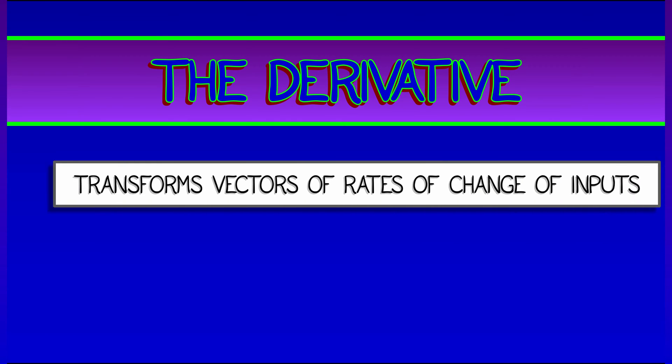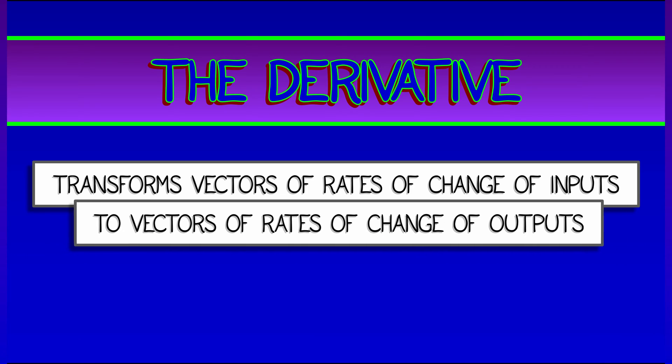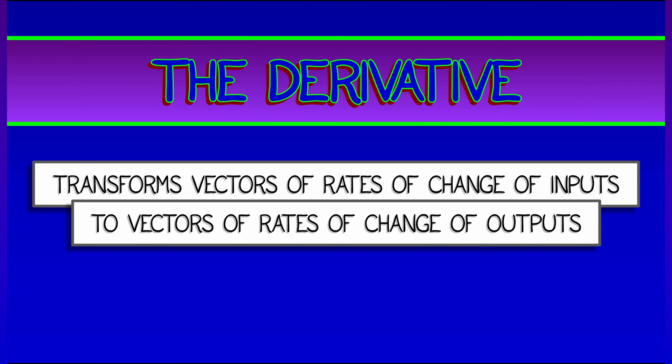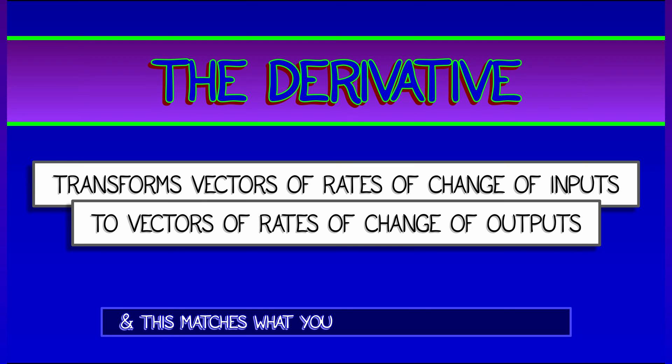So here's how it works. The derivative transforms vectors of rates of change of inputs to vectors of rates of change of outputs. This is what a linear transformation is supposed to do, and in the context of a derivative, we're working with rates of change.